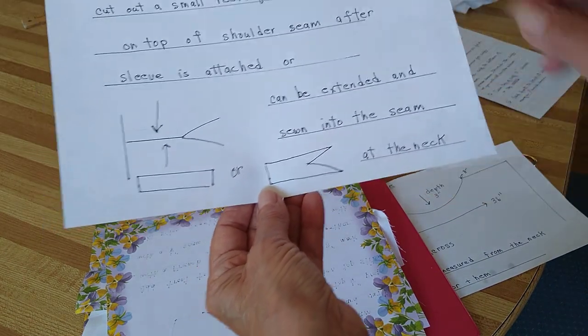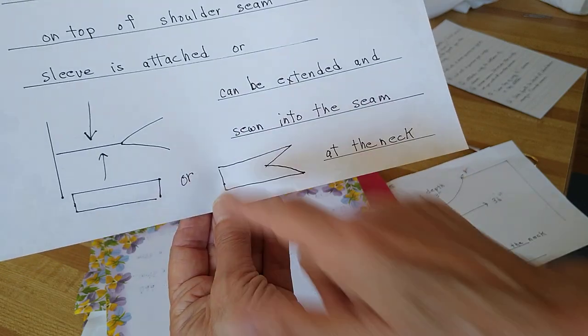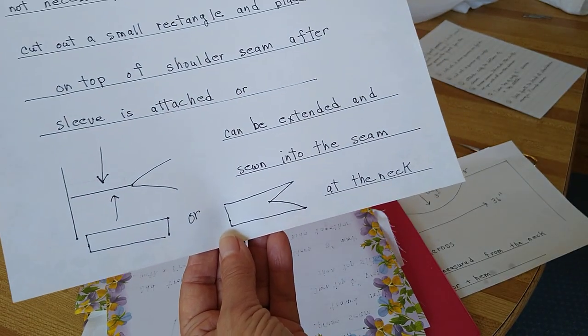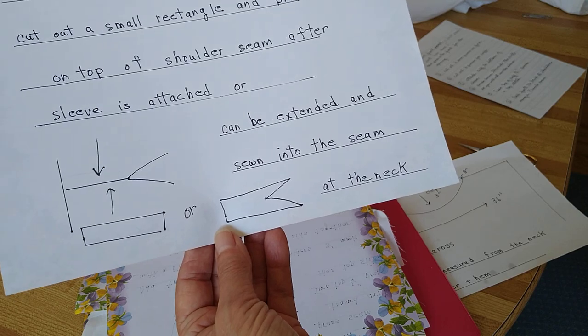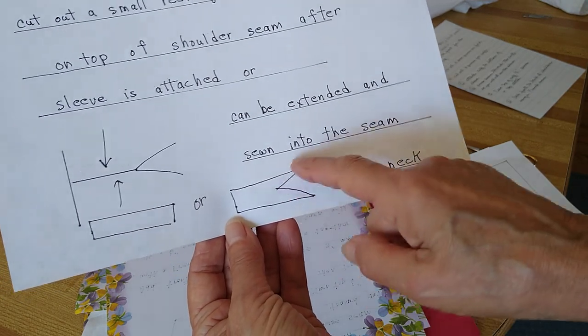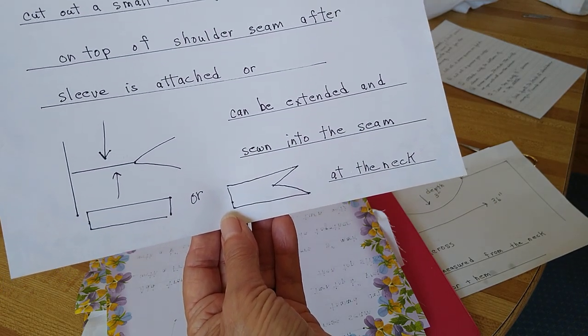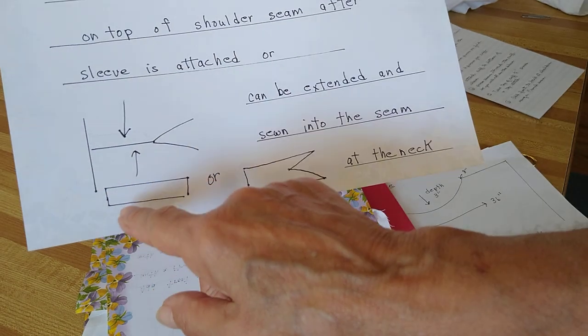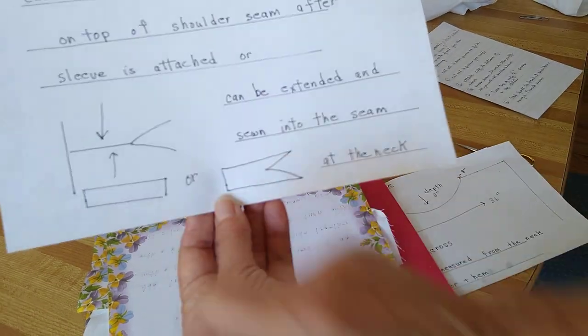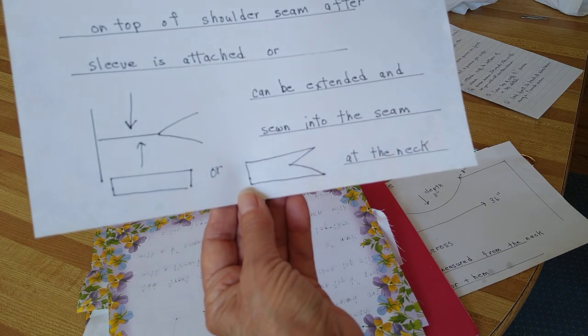The reinforcement can either be a rectangle or it can be something like this. You can choose which one depending on the thickness of the fabric and whether you think you can get all this fabric here into that neckline. It's a little tricky but either way you're going to have to fold to make sure that the ends aren't showing. You're going to tuck them under and top stitch it.